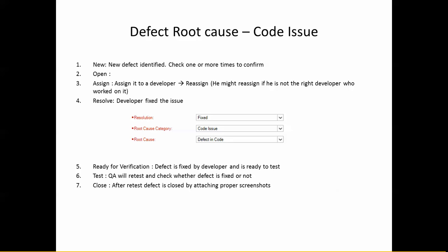The developer must update three fields: resolution, root cause category, and root cause. In this case, the resolution is a code fix, the root cause category is 'Code Issue,' and the root cause is 'Defect in Code.' Once resolved, QA opens the defect, thoroughly tests it including subsystems, attaches screenshots, and closes the defect. This is the normal flow for a code issue.